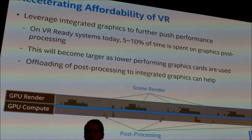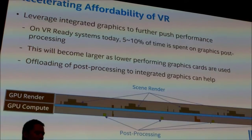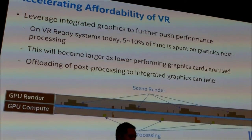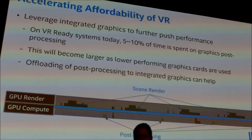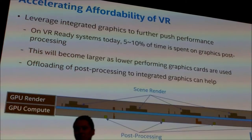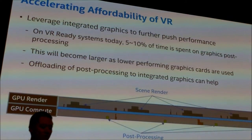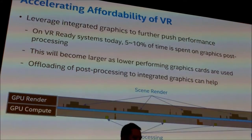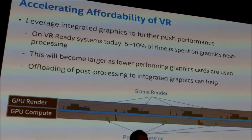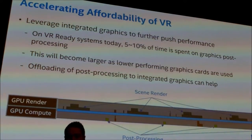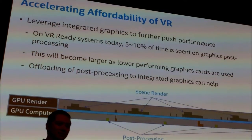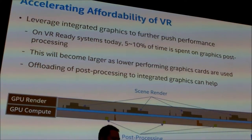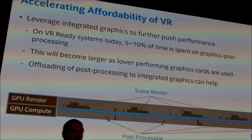Another way to make use of system resources is integrated graphics. If you have discrete graphics, your integrated graphics might be idle most of the time. In typical VR solutions, graphics rendering happens around 90% of the time on the GPU, and 5-10% is spent on graphics post-processing — things like barrel distortion, composition, and time warp reprojection. As you target lower-end GPUs, that 5-10% number could increase. To offset this, you can move those post-processing tasks over to integrated graphics, allowing your discrete GPU to keep doing your main rendering.